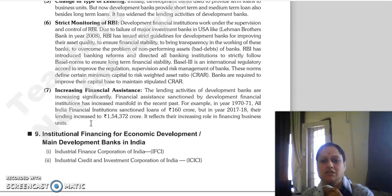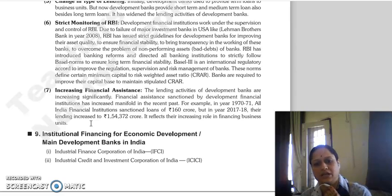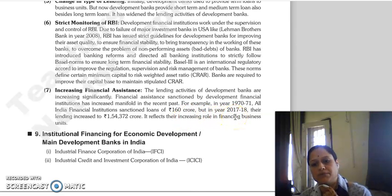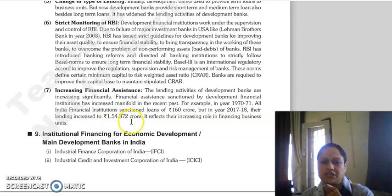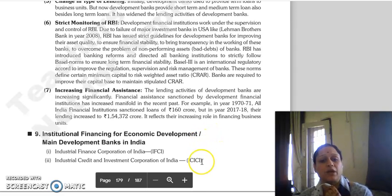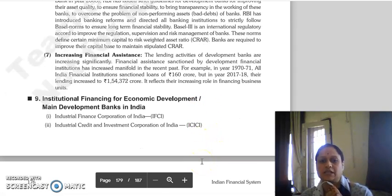Then, increasing financial assistance — the lending activities of development banks have increased. The financial assistance sanctioned by development financial institutions has increased in recent years. In 1970-71 it was 160 crore rupees, which when compared to 2017-18 has increased to 1,54,372 crore rupees, showing the increasing role of financing for business units.